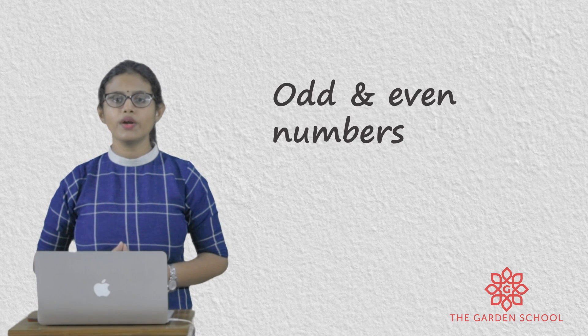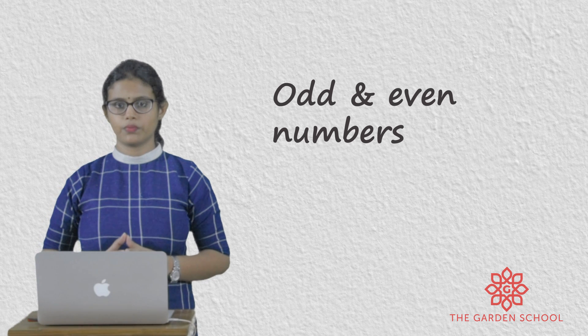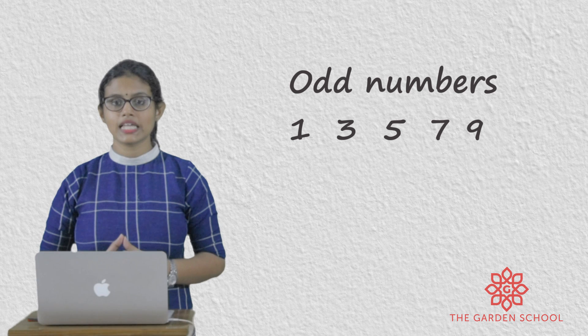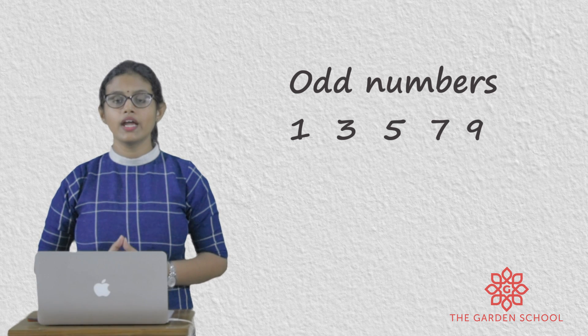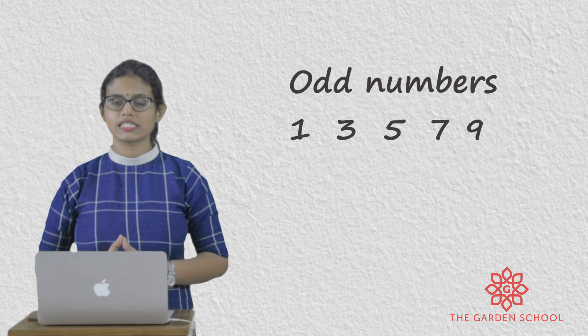The next one is about odd numbers and even numbers. So which are odd numbers? Numbers that end with 1, 3, 5, 7, 9.